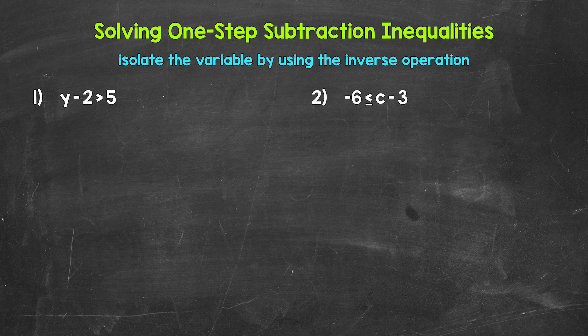When we solve inequalities, we want to isolate the variable, get it by itself on one side of the inequality. We do that by using inverse operations, opposite operations. Basically, we use an inverse operation to undo another operation, and this will isolate the variable. So this is just like when we solve equations.